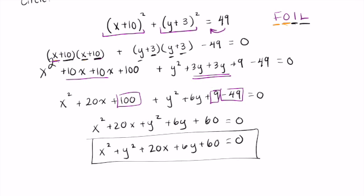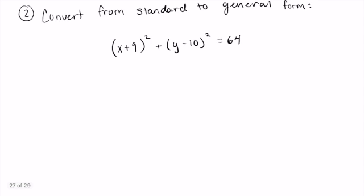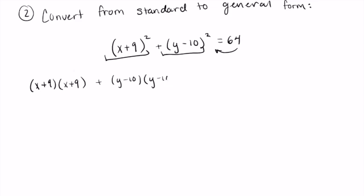kind of speed it up a little bit. I have (x+9)(x+9) + (y-10)(y-10) - 64 = 0. I'm going to FOIL these, so my first times my first gives me x² + 9x + 9x + 81 +